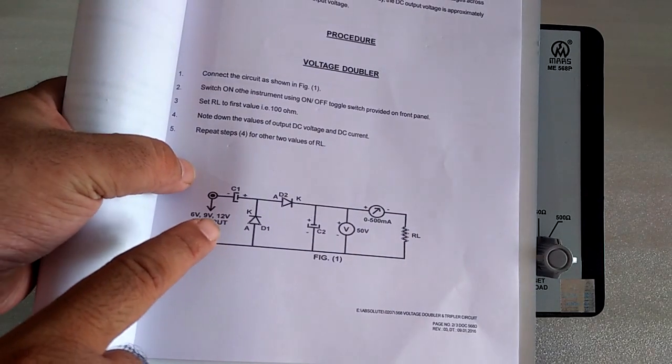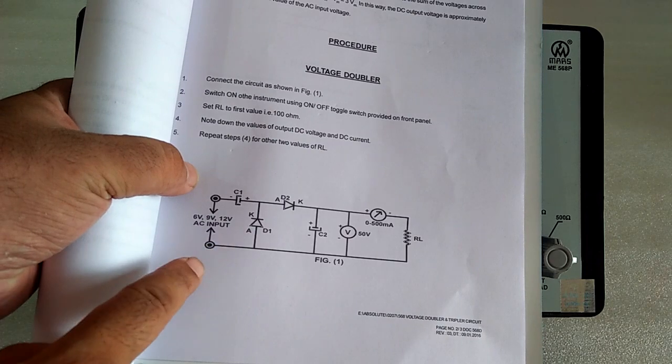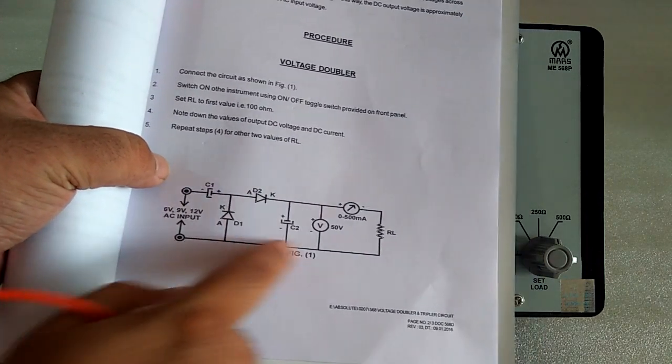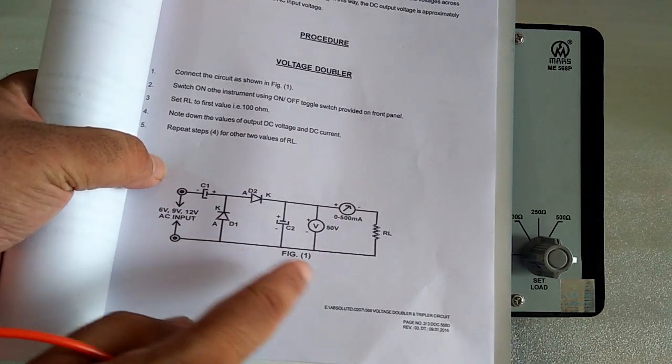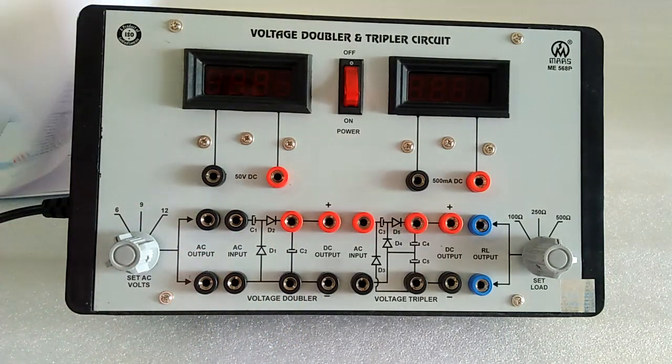Here we have the circuit diagram. Now I'm patching it, and we'll see the observation of how it doubles the value of the AC voltage.